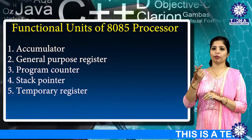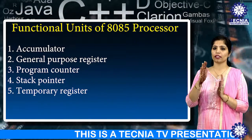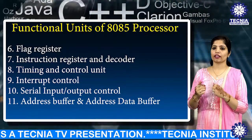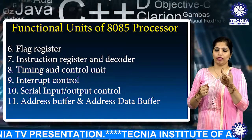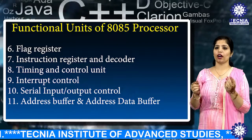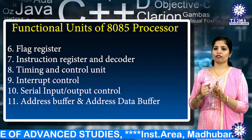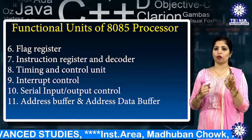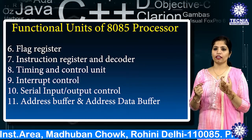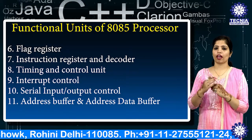The next function is the temporary register, which is an 8-bit register that holds the temporary data of arithmetic and logical operations. The next is the flag register, also an 8-bit register having 1-bit flip-flops which hold either 0 or 1 depending upon the result stored in the accumulator. There are 5 flag flip-flops: Sign (S), Zero (Z), Auxiliary Carry (AC), Parity (P), and Carry (C).